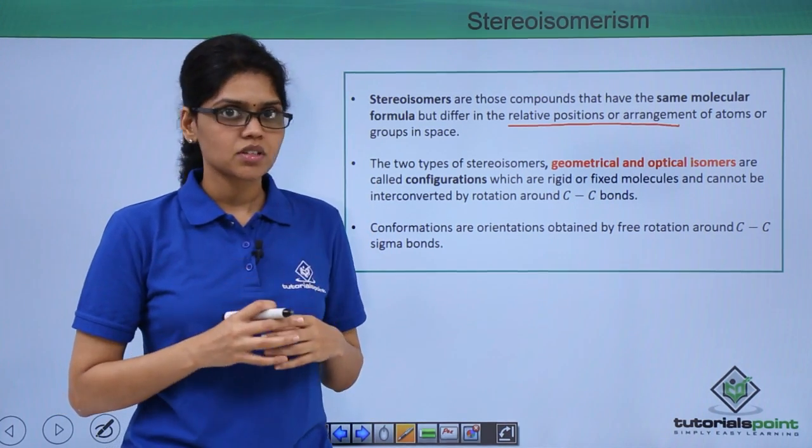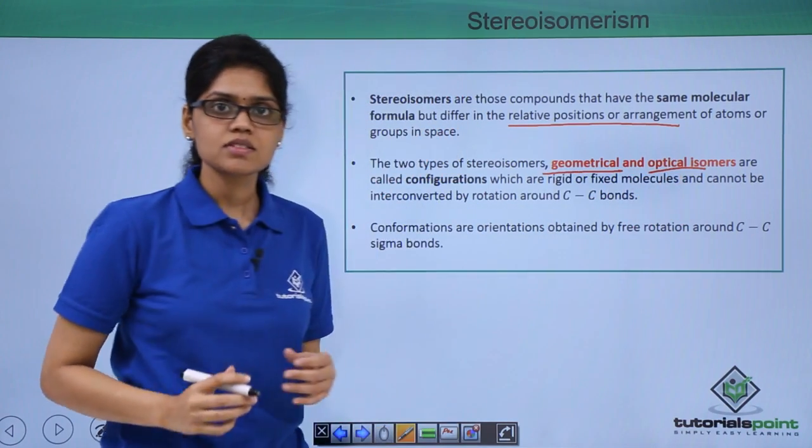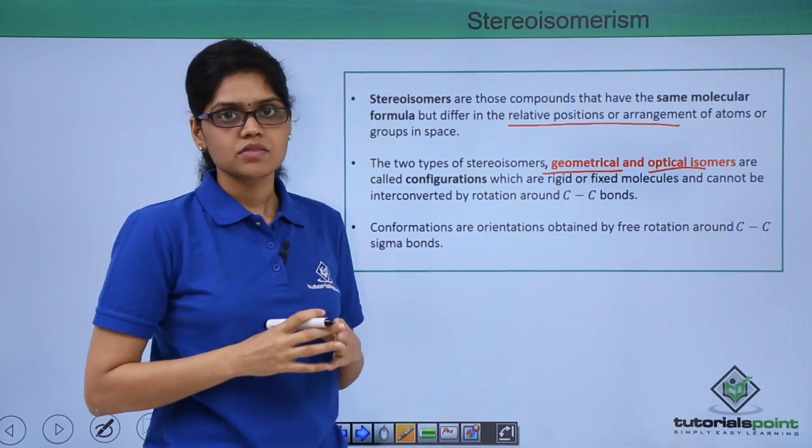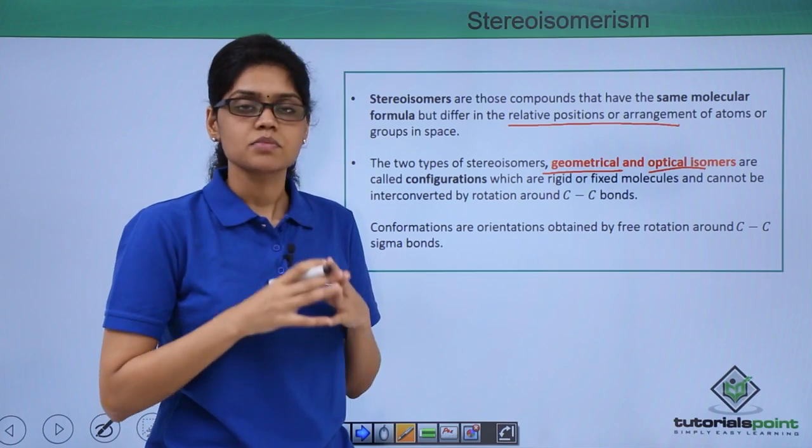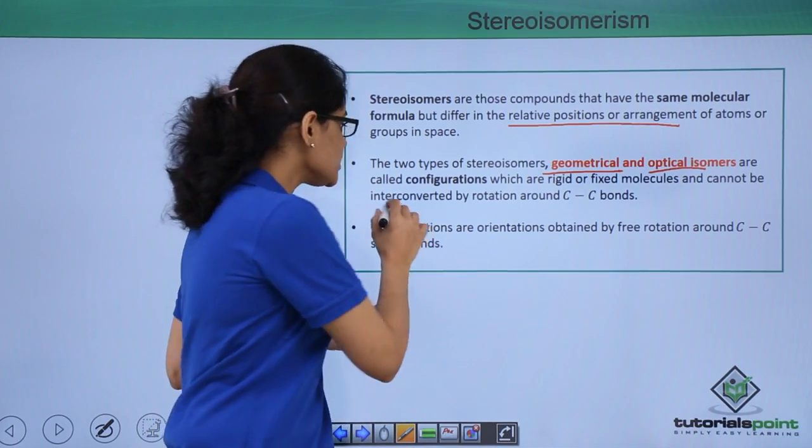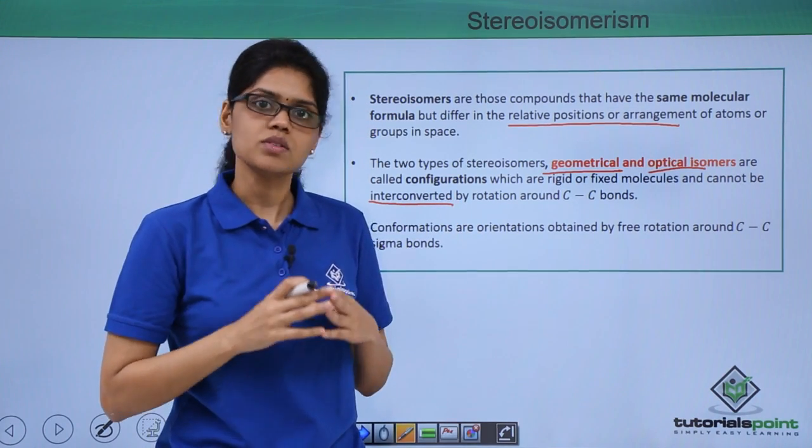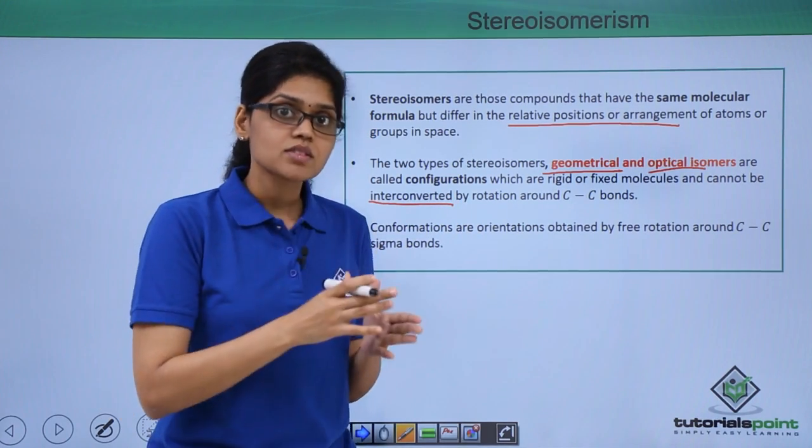There are two types of stereoisomers, geometrical isomers and optical isomers, and these can also be classified as configurational isomers because these are very rigid molecules where the interconversion between structures is not possible by free rotation around C-C bonds.